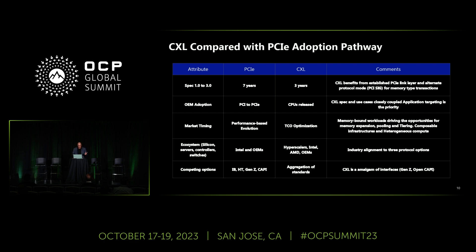From an OEM adoption standpoint, PCIe was more of an evolution. Whereas with CXL, it's really opportunistic and driven by CPU manufacturers releasing CXL-supported processors, as well as the controller technology, switches, and all the devices required to provide a CXL solution. The CXL spec itself is closely coupled to the applications it's primarily targeting, providing TCO optimization across the three different CXL protocols.